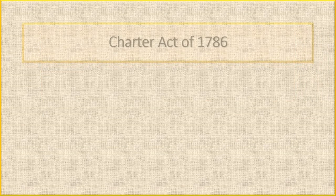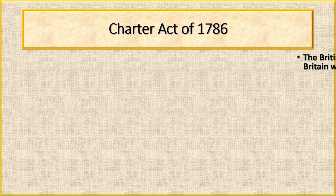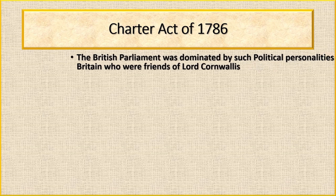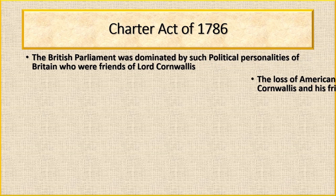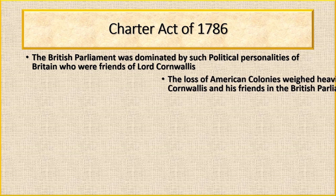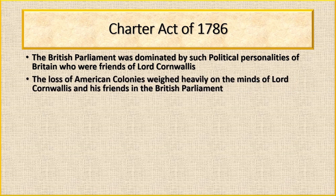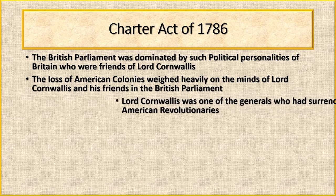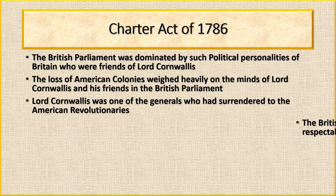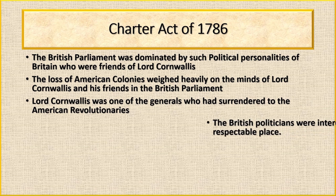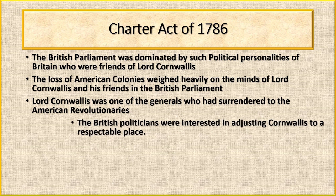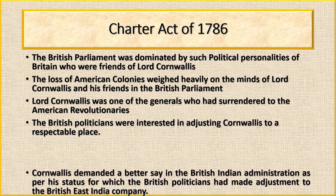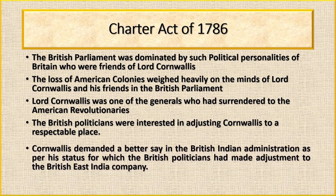Let us now study the circumstances leading to the enactment of the Charter Act 1793. The Charter Act of 1786 may be taken as the first influencing factor. The British Parliament was dominated by political personalities who were friends of Lord Cornwallis. The loss of American colonies weighed heavily on their minds; Lord Cornwallis was one of the generals who had surrendered to the American revolutionaries. British politicians were interested in adjusting Cornwallis to a respectable place, and made adjustments to the British East India Company accordingly.